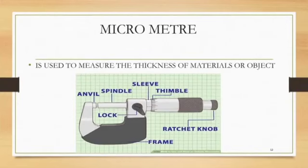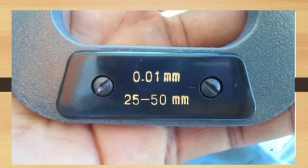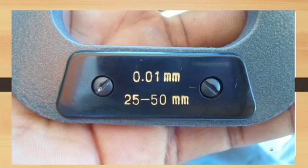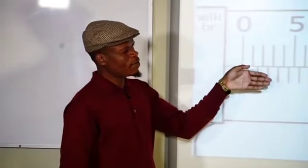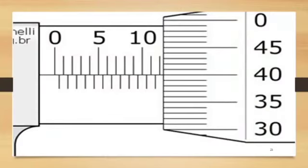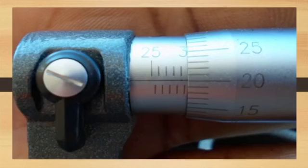The micrometer is more complicated than the vernier caliper. They come in ranges: 0 to 25, 25 to 50, 50 to 75, and 75 to 100 mm. The examiner may ask which range a micrometer falls in — always check the first marking on the instrument. One instrument may start at zero, indicating a 0–25 range; another starting at 25 falls in the 25–50 range.